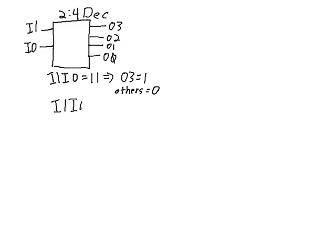If I1, I0 is equal to 1, 0, then output 2 will be selected. It will be active. It's going to be set to 1. And the others, all the other ones, will be equal to 0.